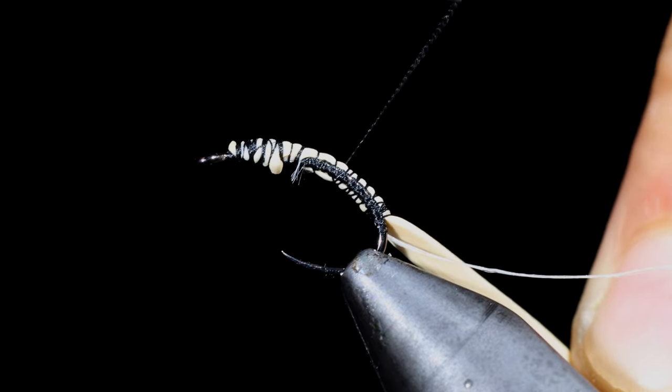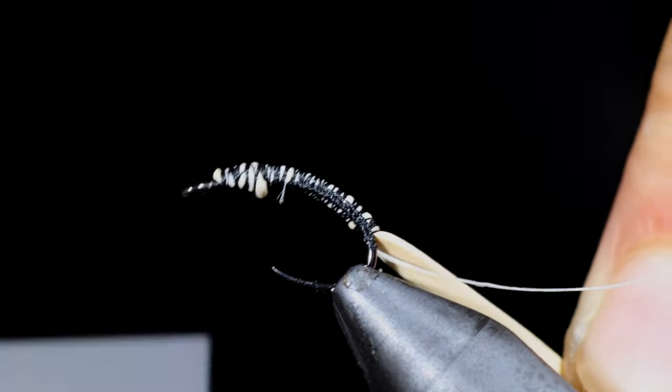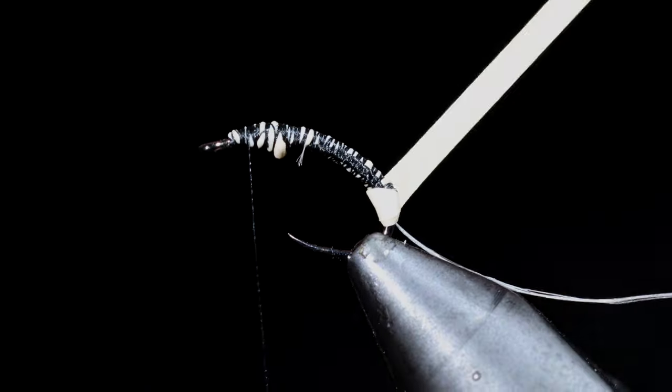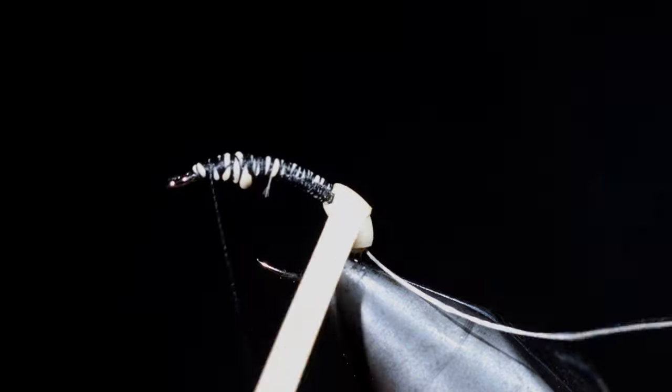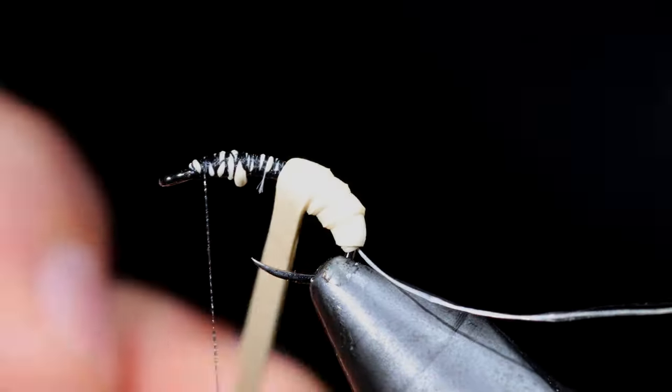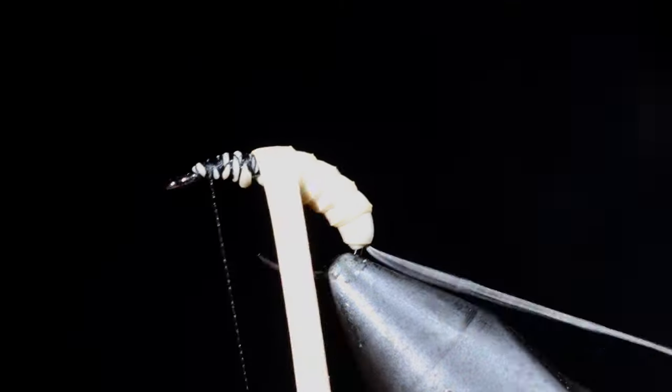Take further securing wraps wrapping towards the head of the fly. Once complete, we will start to wrap our rubber band forward. We'll overlap the previous wraps that will provide a transition towards the head of the fly but also give it a nice segmented look.